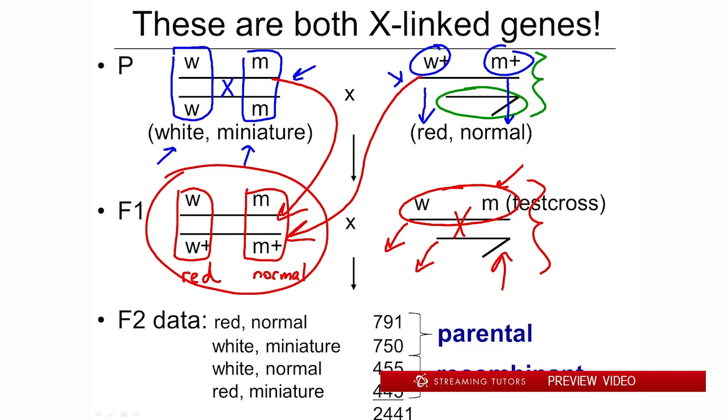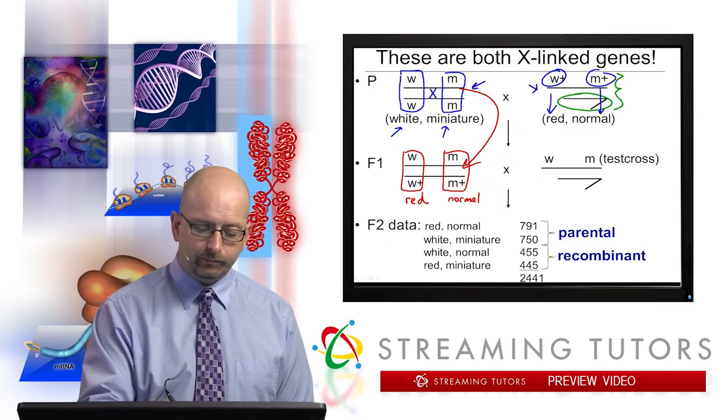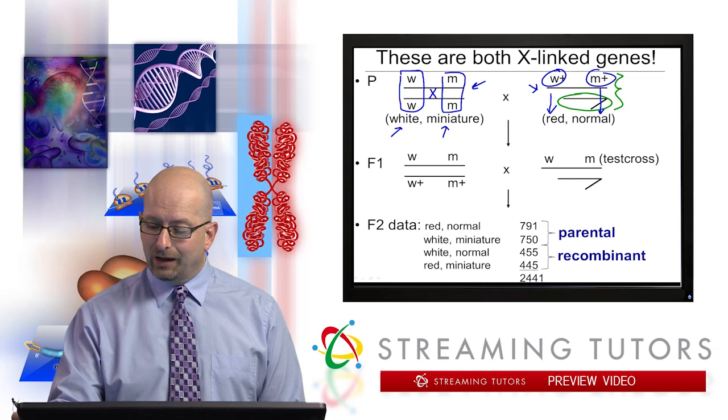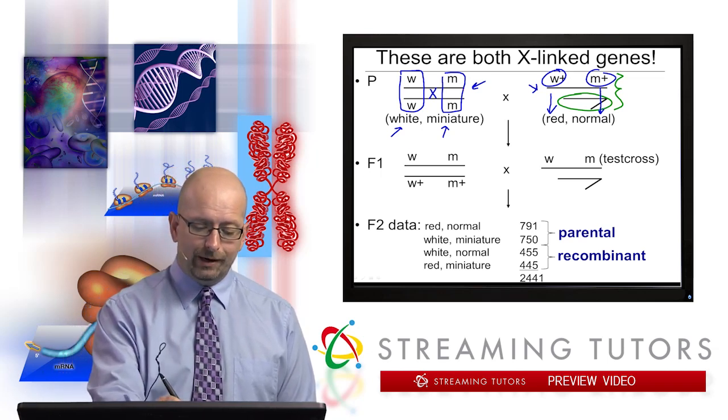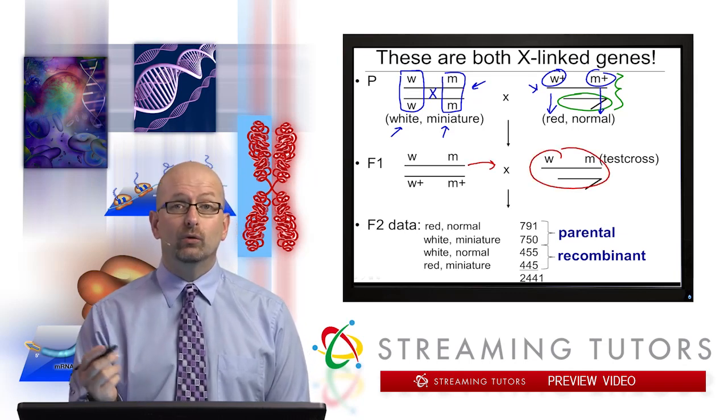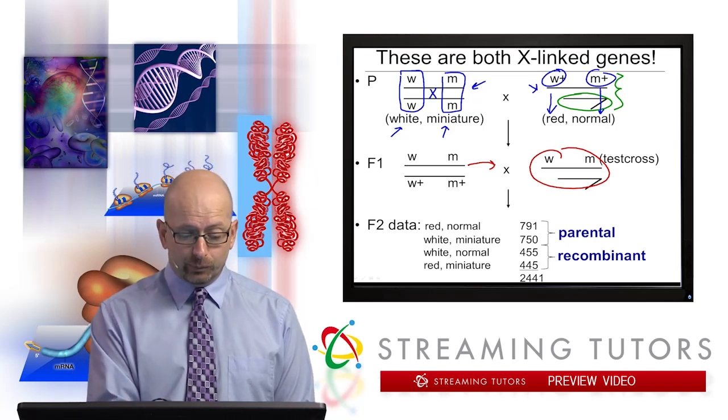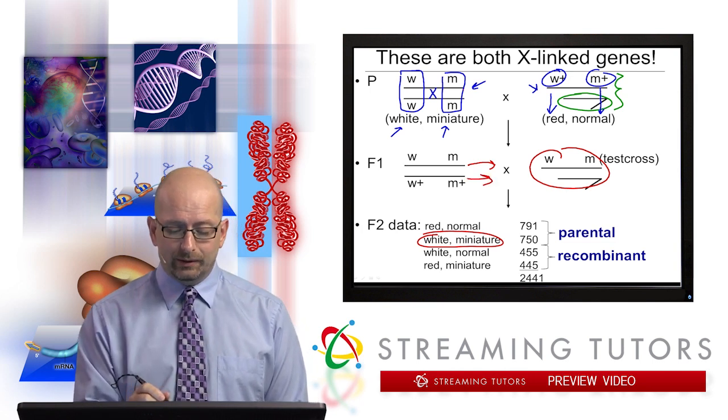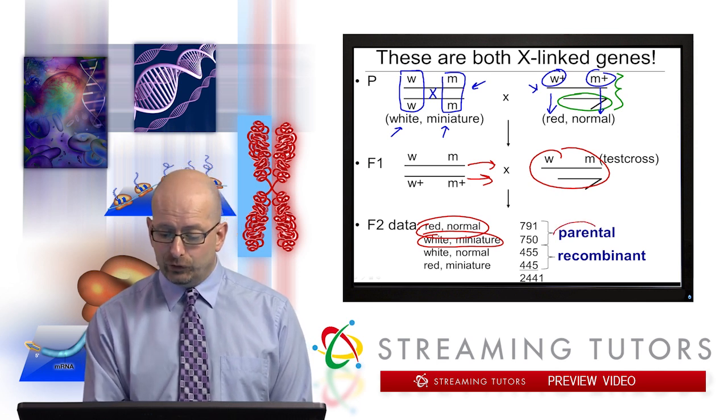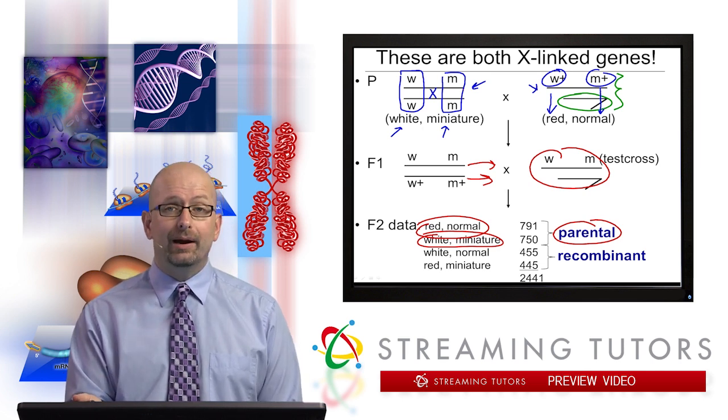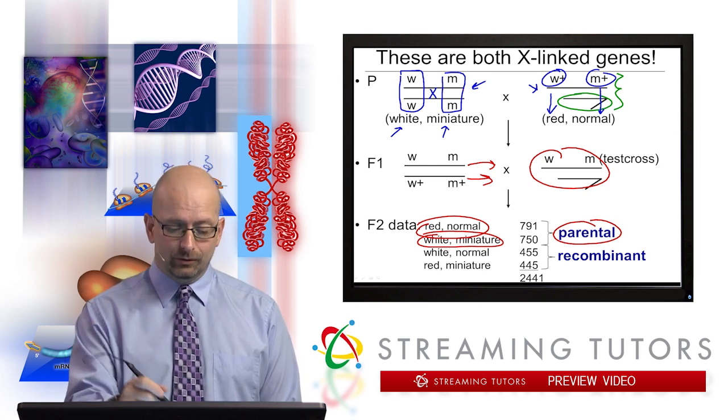Let me erase just because this is getting a little busy. If we just did this cross and a crossover did not occur at all, all of the offspring would look parental, because this entire chromosome would go into the offspring. One set of the offspring would be white and miniature, and if this chromosome was the one that went, they would all look red and normal as you see over here. That's why we refer to those offspring as the parental types. They resemble one of the parents. This one resembles that father, this one resembles that mother.